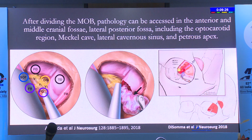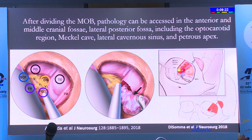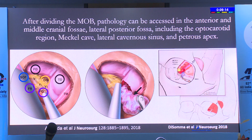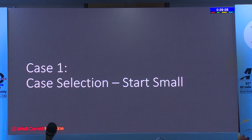When that meningoorbital band is divided, the temporal lobe can be reflected, giving wonderful access to pathology in the middle cranial fossa, the lateral cavernous sinus, Meckel's cave, and even the petrous apex. This is a powerful and direct approach to skull base pathology that is otherwise challenging to reach and requires significant retraction.